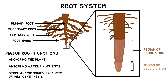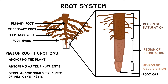The zone of elongation is where the new cells stretch and increase in length, causing the root to get longer. The zone of maturation is where cells specialize or differentiate into their unique roles. At the very end of the root is the root cap, which contains organelles that perceive gravity and allows the main root to grow down rather than at random.